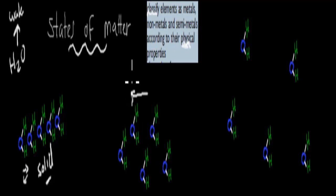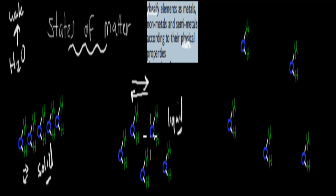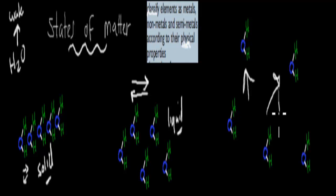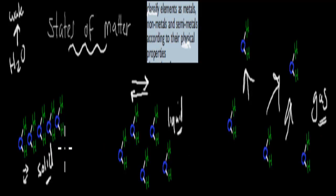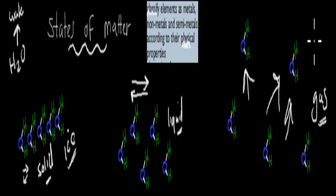If they're moving side by side, sliding past each other, then we call it a liquid — they're moving a bit more but still not completely free, still close together but sliding past each other. Whereas if they're just moving freely by themselves, randomly in random directions, we call that a gas. So for H2O, the solid version is ice, then liquid water, and the gas form would be steam or water vapor.